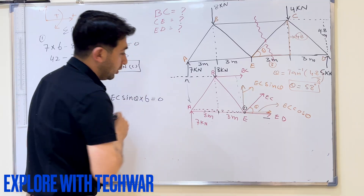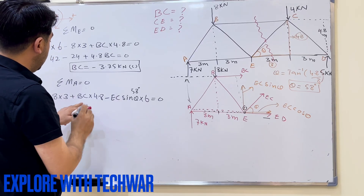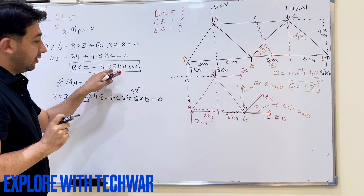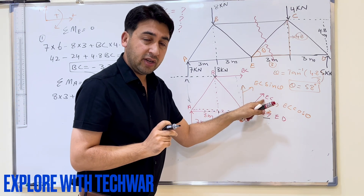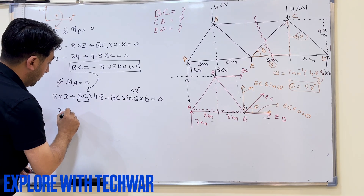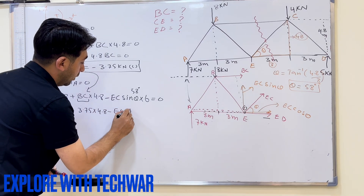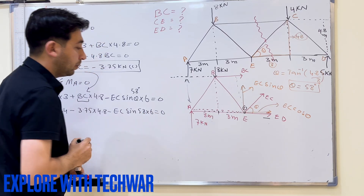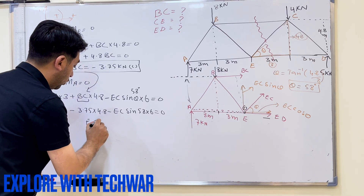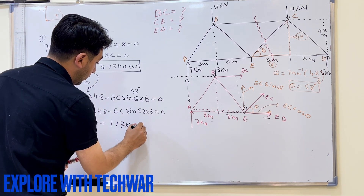Setting the moment equation about A equal to zero and substituting theta = 58° and BC = −3.75 kN (negative because assumed tension but actually compression): 24 − 3.75 × 4.8 − EC·sin(58°) × 6 = 0. Solving this gives EC = 1.17 kN, which is positive, meaning EC is in tension.